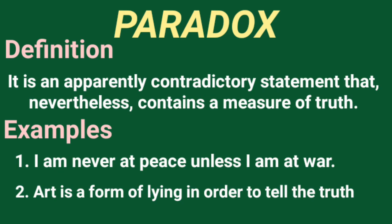The next figure of speech is Paradox. It is an apparently contradictory statement that nevertheless contains a measure of truth. For example: 'I am never at peace unless I am at war.' And the second example: 'Art is a form of lying in order to tell the truth.' Paradox means contradiction — contradictory words, terminologies, and phraseologies are used. Here, 'at peace' and 'at war' in the first example, and 'lying' and 'telling the truth' in the second, are completely opposite to one another. That's why it is called Paradox.